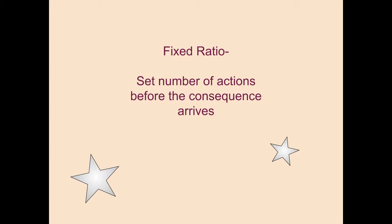Fixed Ratio is a set number of actions before the consequence arrives. For example, Piper hitting the bar in the operant chamber five times before getting the pellet.